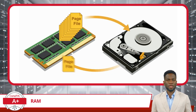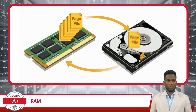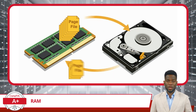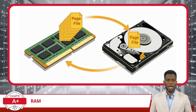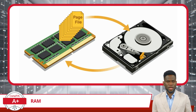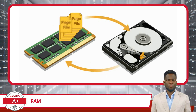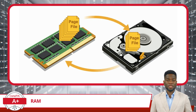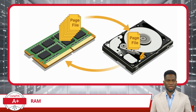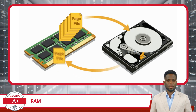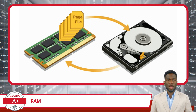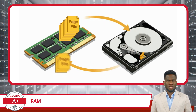While virtual memory enables the system to handle larger processes and multitasking effectively, using the page file on the hard drive is slower than accessing data directly from RAM. This is because drive access times are significantly slower compared to RAM access times. Excessive reliance on virtual memory due to insufficient physical RAM can lead to performance slowdowns, where the system spends more time swapping pages in and out of the page file than executing actual tasks.